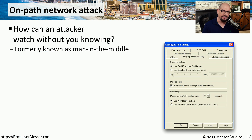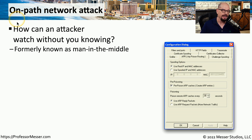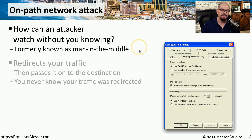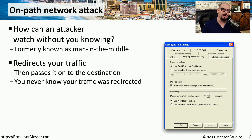There's an interesting attack that allows an attacker to sit in the middle of a conversation and be able to see everything sent back and forth between two devices, and in some cases modify the information that's sent back and forth. We refer to this as an on-path attack. Sometimes you'll hear this referred to as a man-in-the-middle attack. From the end user's perspective, they have no idea that someone's in the middle of their conversation and potentially changing the data that they're sending to each other.